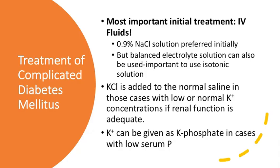The most important treatment we can do is IV fluids. Because of the unknown status of electrolytes at the beginning of treatment, we'll start with normal saline. 0.9% saline is preferred initially. You can use a balanced electrolyte solution like lactated Ringer's. The most important thing is that you use an isotonic solution until you get your electrolytes back.